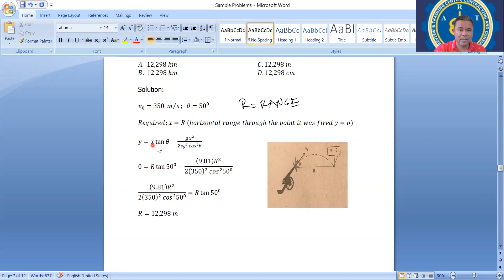Then x equals to the r, or the range. 0 equals r tangent theta minus g, which is 9.81, times r squared all over 2 times the initial velocity, which equals 350 meters per second squared, then cosine squared of 50 degrees. Then we can get the value of r or x.